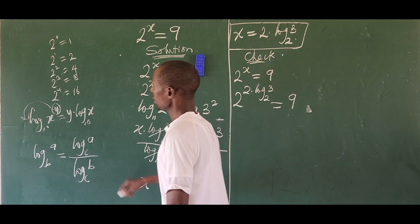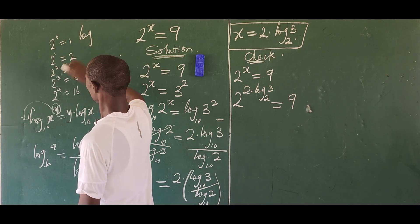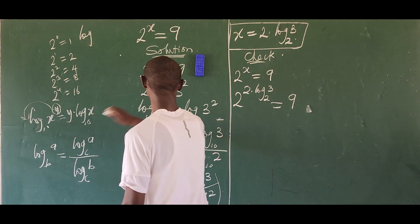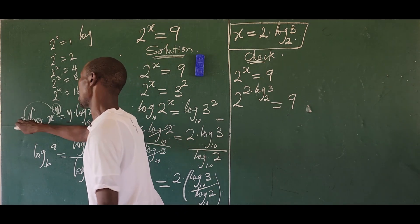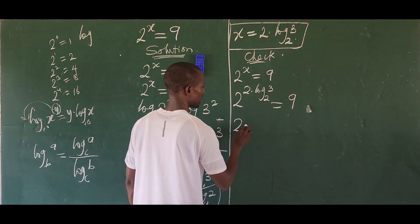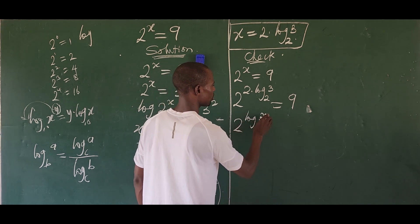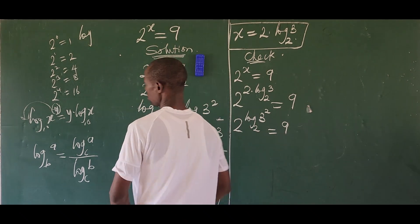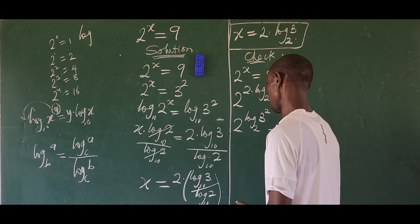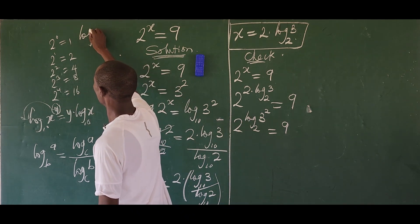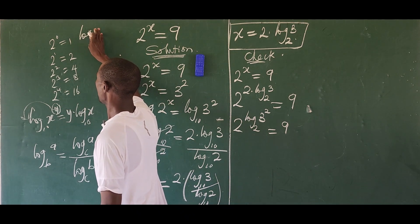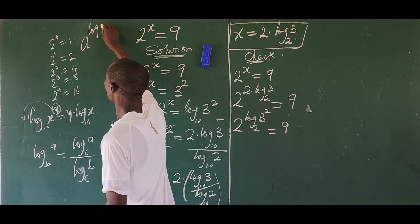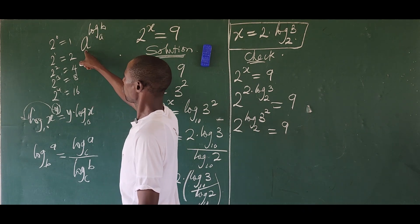We apply the power law of logarithms again, moving the coefficient 2 back as an exponent. So this can be written as 2 to the power of log base 2 of (3 squared), all equal to 9. We then remember another law of logarithms: a raised to the power of log base a of b equals b.